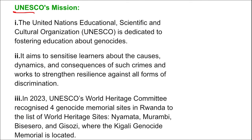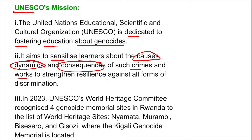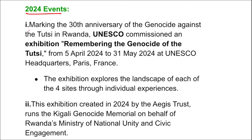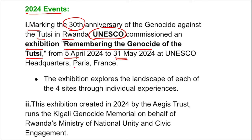UNESCO is dedicated to fostering education about genocides, aiming to sensitize learners about causes, dynamics, and consequences, and works to strengthen resilience against discrimination. In 2023, UNESCO's World Heritage Committee recognized four genocide memorial sites in Rwanda: Nyamata, Murambi, Bisesero, and Gisozi (where the Kigali Genocide Memorial is located). For 2024 events marking the 30th anniversary, UNESCO commissioned an exhibition — 'Remembering the Genocide of the Tutsi' — from 5th April to 31st May 2024 at UNESCO headquarters in Paris, France.